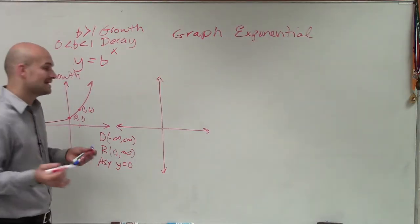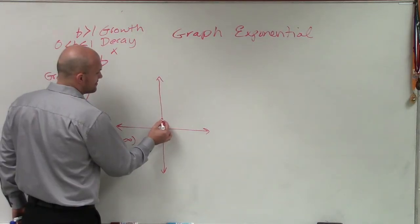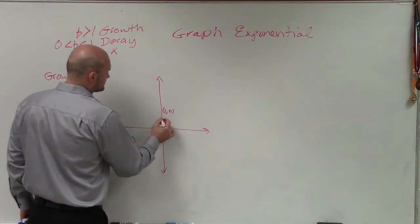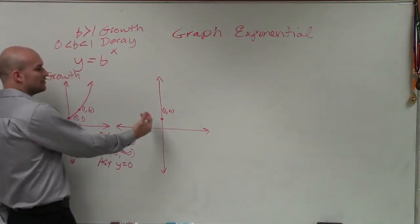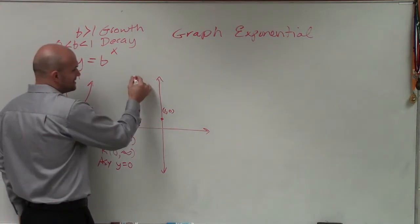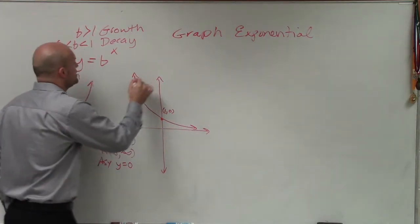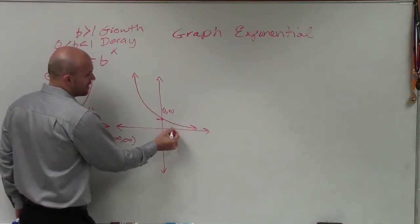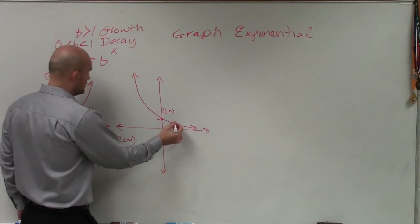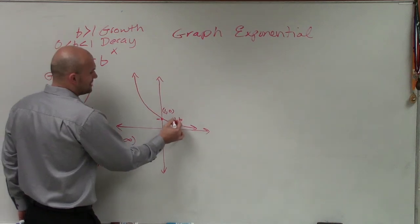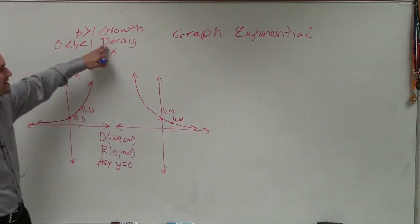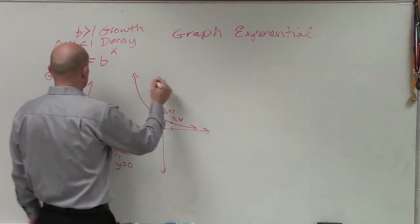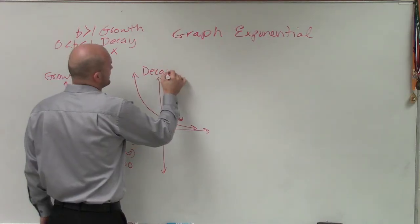Now let's look at the decay graph. The decay graph has some of the same points — the y-intercept is still at (0, 1), and then the point at x = 1 is (1, b). But instead of going left to right increasing, it actually goes left to right decreasing. Remember, b is less than 1 for decay — b has to be less than 1 but greater than 0. That's why this graph takes this form, and that is what we call a decay graph.